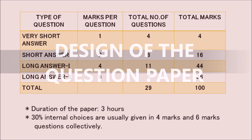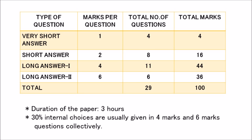The 3-hour paper has 29 questions in all, categorized under 4 sections. As it is evident from this table, you would be dealing with 1, 2, 4 and 6 markers respectively. Please note that the question paper usually offers internal choice in 3 four-mark questions and 3 six-mark questions.